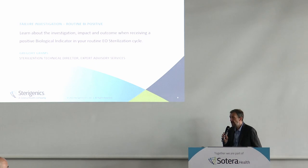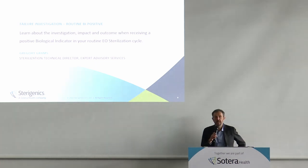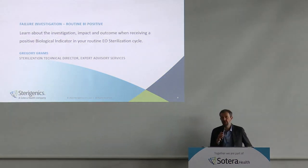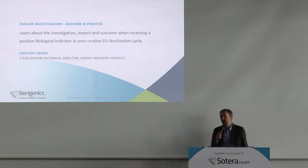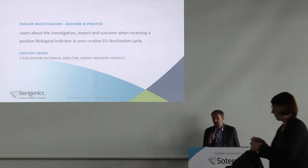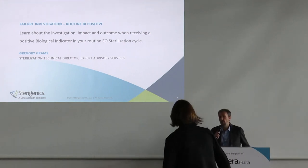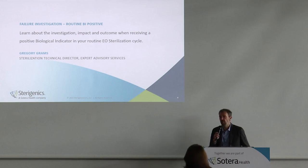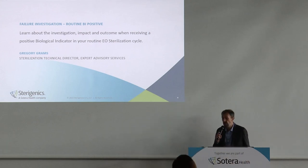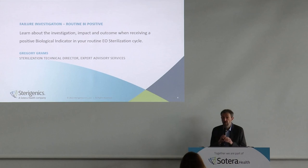Welcome everybody. The second presentation of this afternoon session will be linked to ethylene oxide sterilization and a failure that you might never expect but that may occur: a positive BI. What do you do with a positive BI when you have a routine sterilization? How can you deal with that?